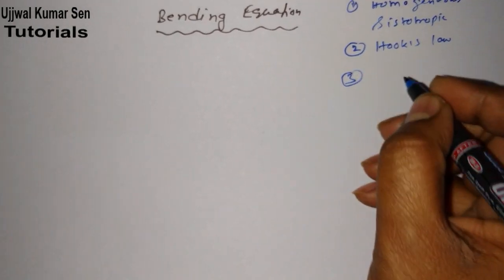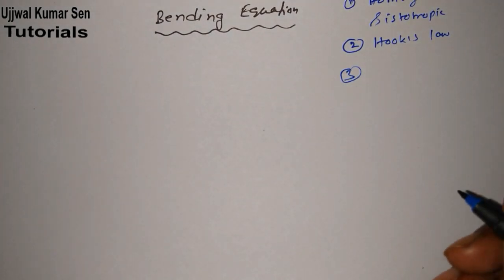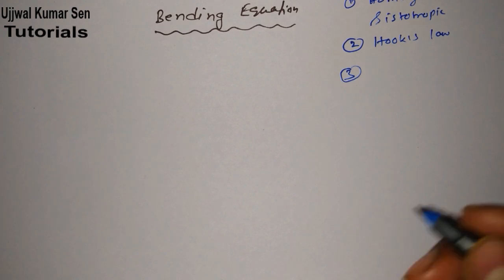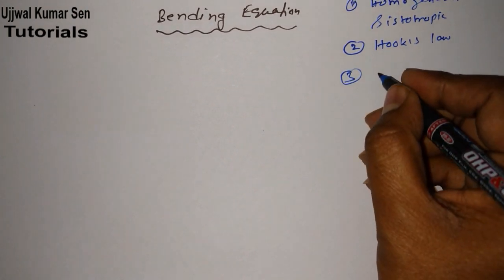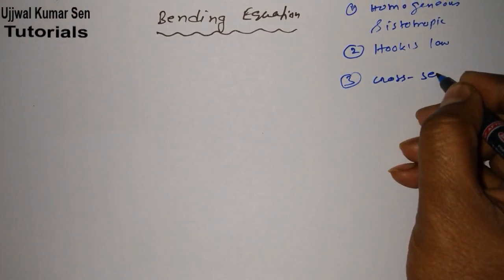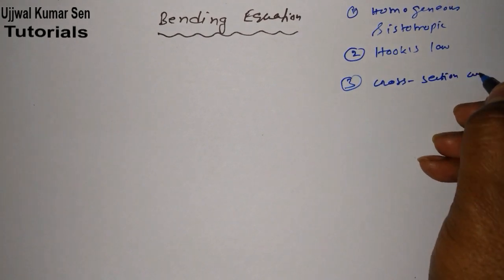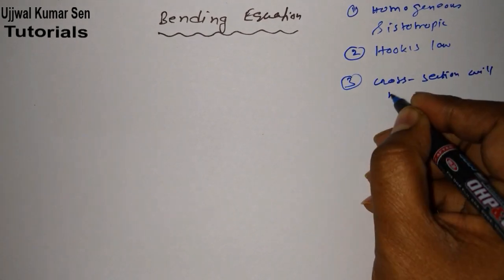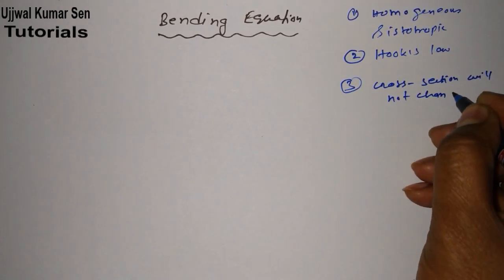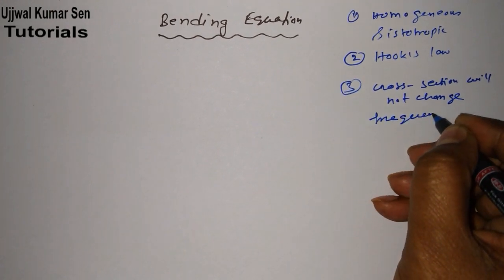The third assumption is that the cross-section of the beam will not change frequently.